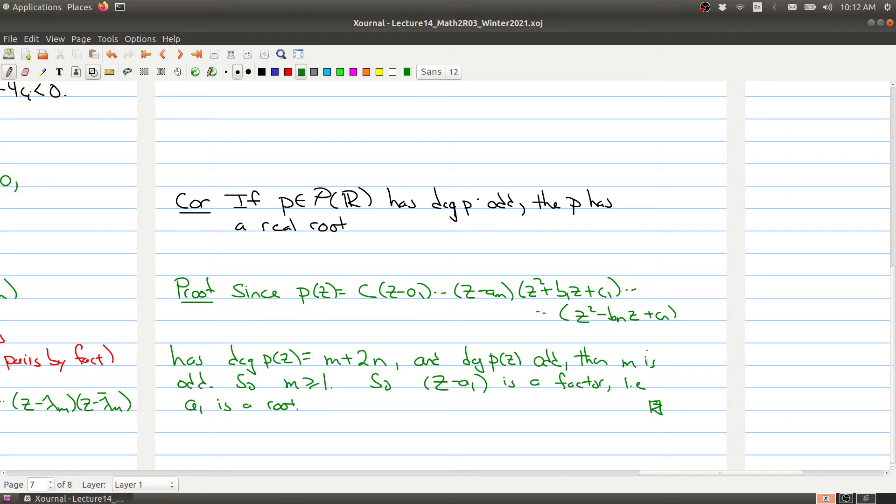Because without m being odd, it could be the possibility that m is zero. That way, if we allow m to be even, it could lead to the possibility these are all zeros, so we don't have any roots. But when the degree is odd, we know that m has to be at least one, so we have at least one such term.